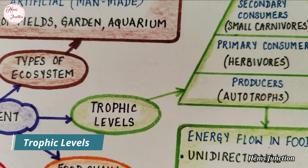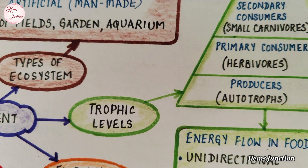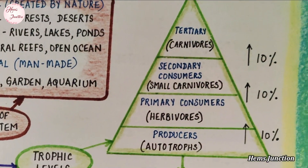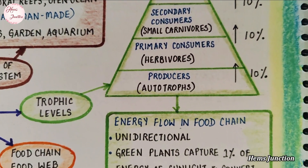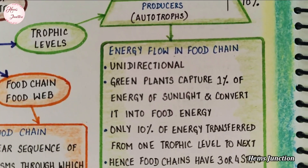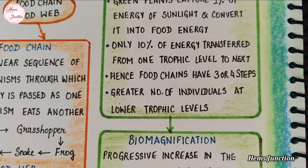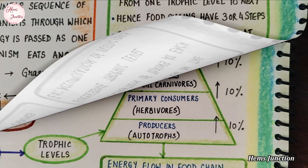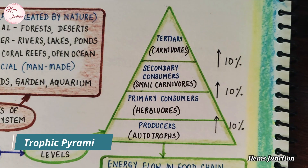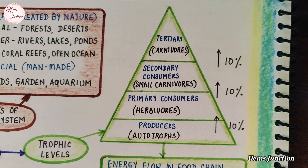Trophic levels: each step or level of the food chain forms a trophic level. That is, the transfer of food or energy at the various steps in a food chain forms a trophic level. Every food chain has three or four trophic levels. Here is the trophic pyramid. The autotrophs or producers are at the first trophic level. The herbivores or primary consumers come at the second.